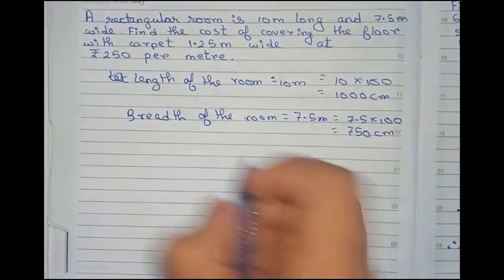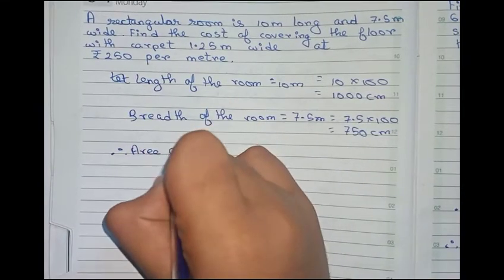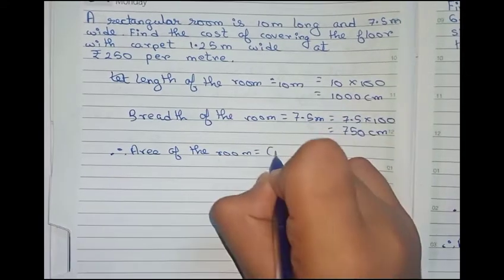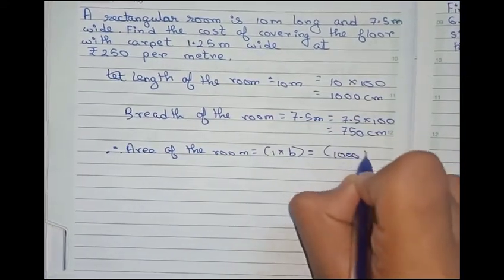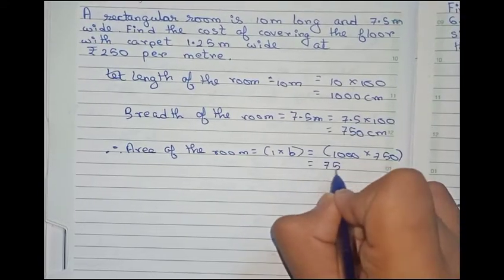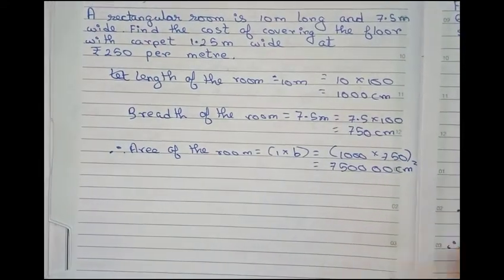Now you will find the area of the room. Therefore, area of the room is equal to length into breadth. Equals to 1000 into 750. That is equal to 750000 centimeter square. This is the area of the room.